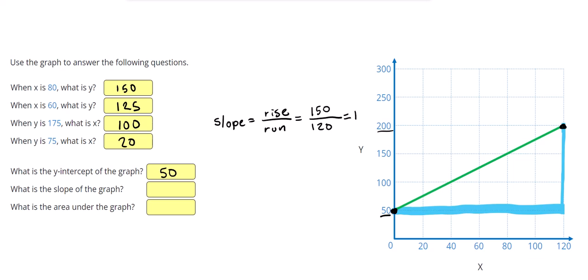Dividing 150 by 120 gives me 1.25, which is our answer for the slope.